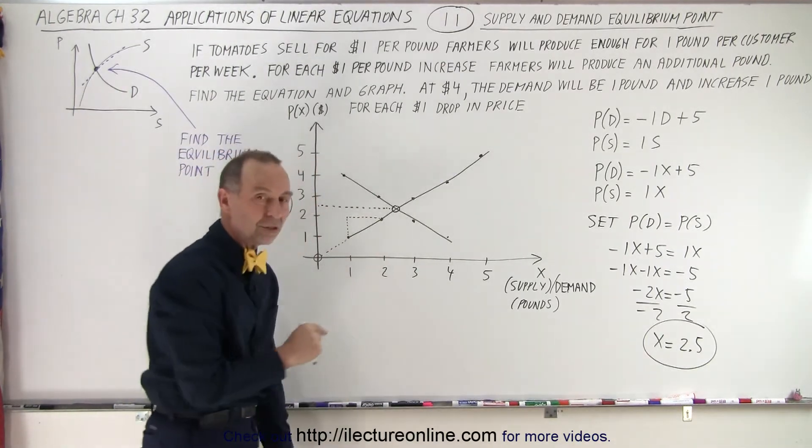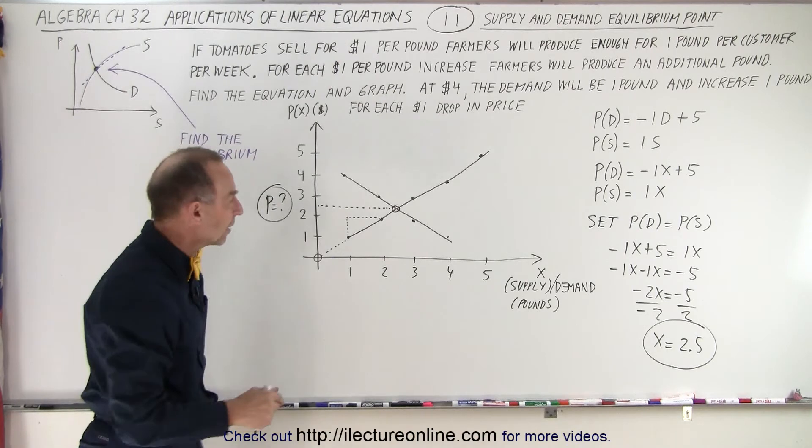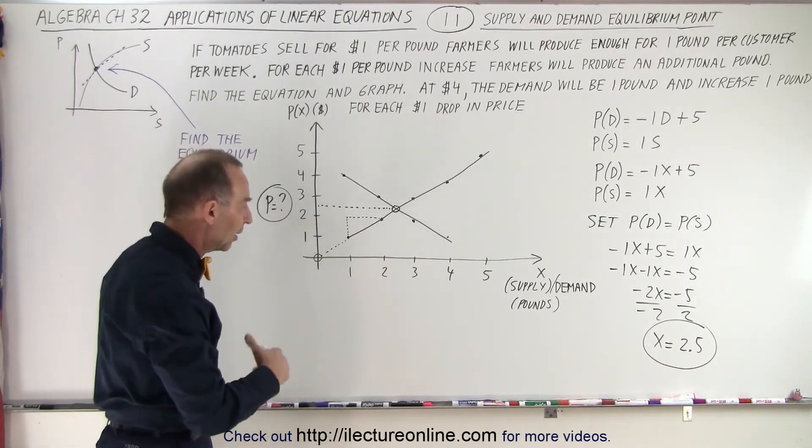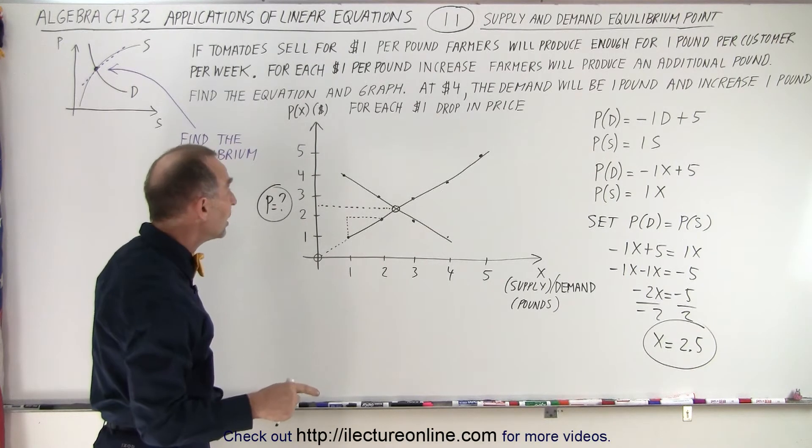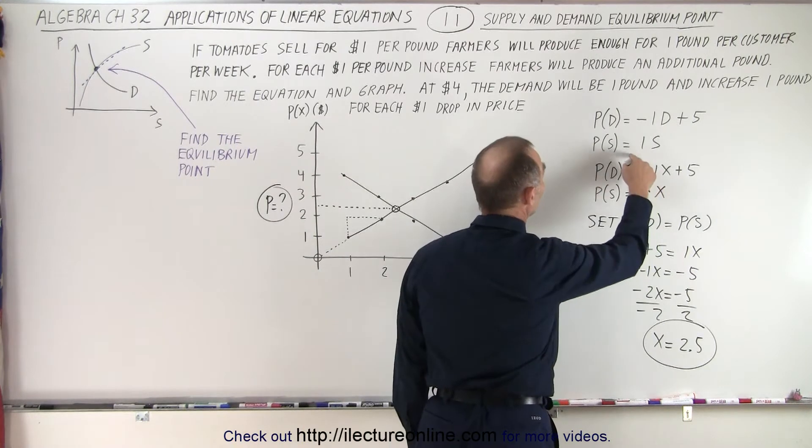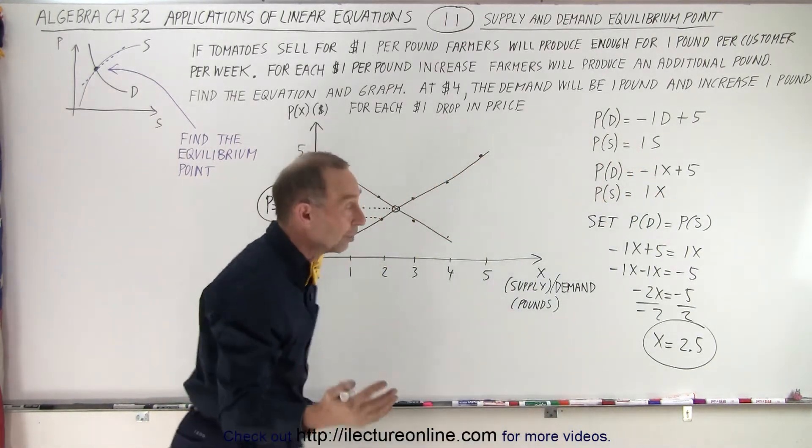2.5 pounds per customer per week would be the demand if the price was just right to provide the correct amount of supply of an equal amount. So now what we need to do is plug that into one of our two equations. It doesn't matter which one, we can plug it into either one. Let's go ahead and do that.